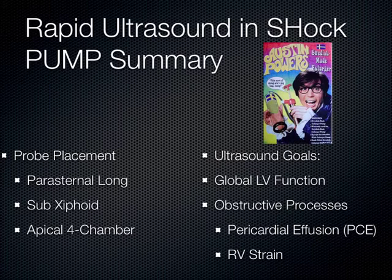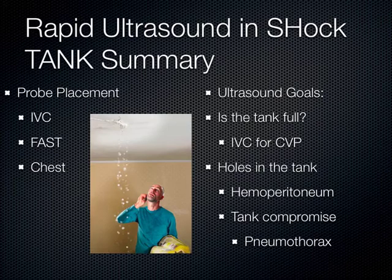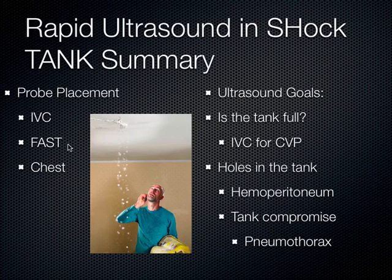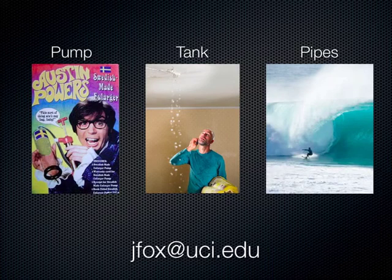In summary: for the pump, it's about probe placement in the three cardiac views, looking for global LV function and obstructive processes like pericardial effusion or RV strain. For the tank, assess IVC as a non-invasive CVP measure — is the tank full? — and check for holes via FAST exam or pneumothorax. For the pipes, perform an AAA exam from the epigastrium to the bifurcation, and check for DVT at the femoral and popliteal veins. In the heat of the battle: the pump, the tank, and the pipes — and you can complete this study quickly in unexplained hypotension.